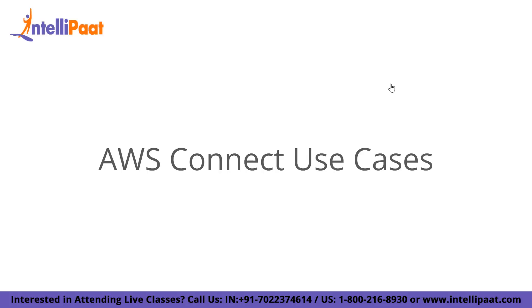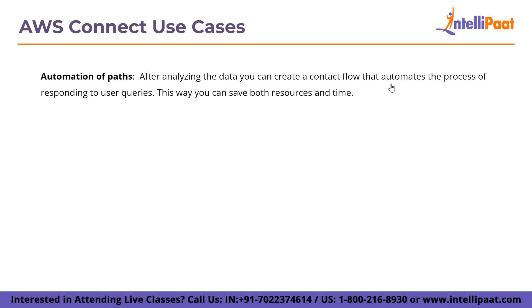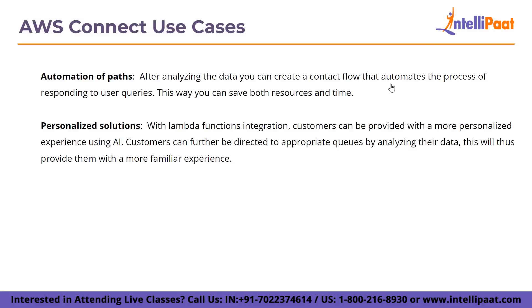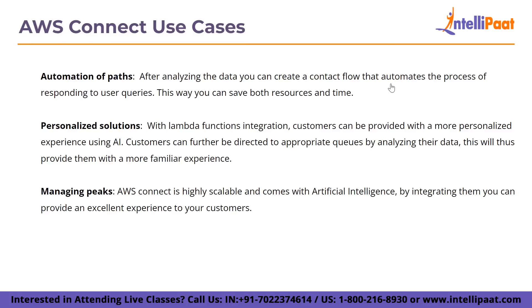Now let us look at some use cases of AWS Connect. The first use case is automation of paths — after analyzing data, you can create a contact flow that automates the process of responding to user queries, saving both resources and time. Another use case is personalized solutions: with Lambda function integrations, customers can be provided with a more personalized experience using artificial intelligence, and directed to appropriate queues by analyzing their data. The last use case is managing peaks — since AWS is highly scalable and comes with AI capabilities, integrating them allows you to provide an excellent experience to your customers.